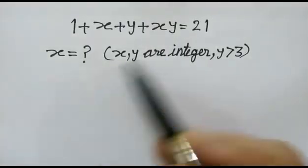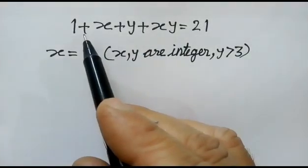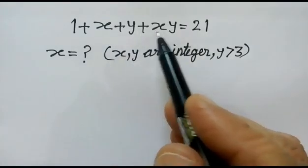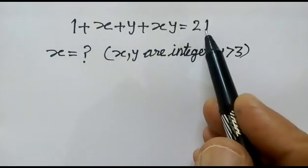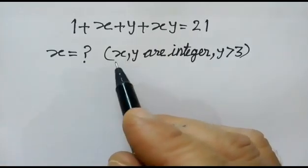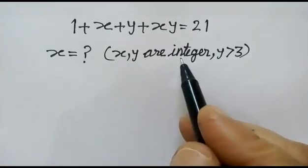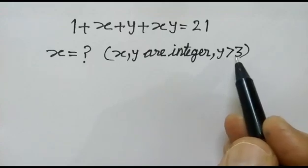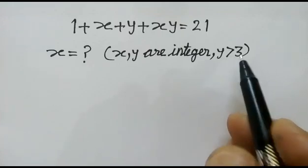Hi friends, we have given an equation 1 plus x plus y plus xy is equal to 21. We have to find out value of x and condition is given x, y are integers and y is greater than 3.